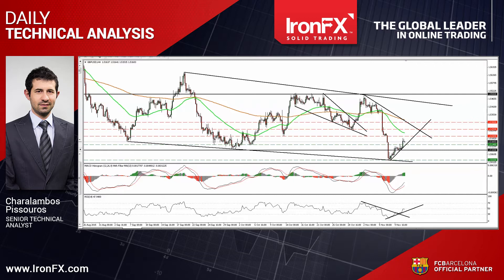I would also like to talk about DAX futures, which fell below the uptrend line taken from the low of the 2nd of October. So let's start our treatment with the sterling dollar currency pair. GBPUSD traded higher yesterday, breaking above the resistance, now turned into support zone of 151.40.